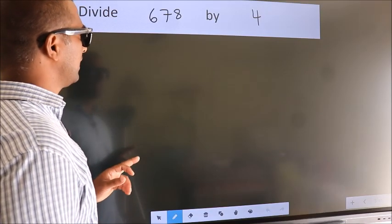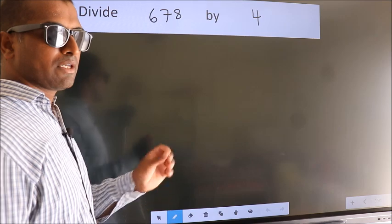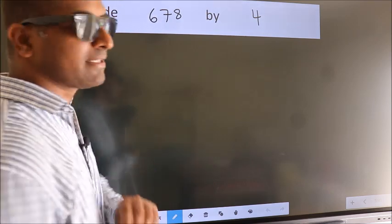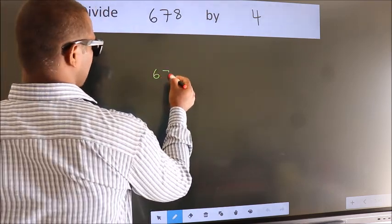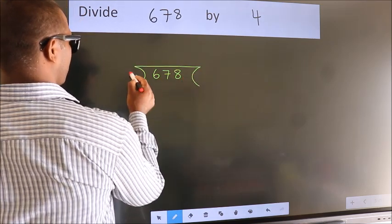Divide 678 by 4. To do this division, we should frame it in this way. 678 here, 4 here.